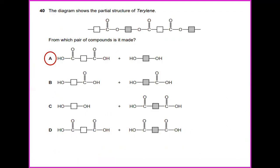The diagram shows the partial structure of terylene. From which pair of compounds is it made? The answer for this number 40 is A.